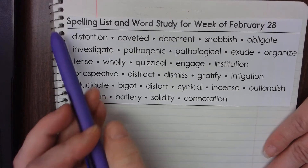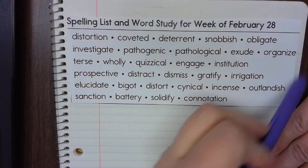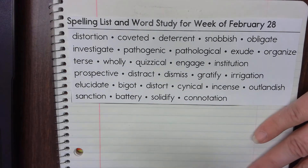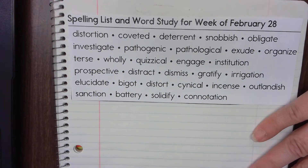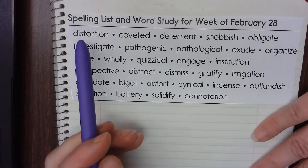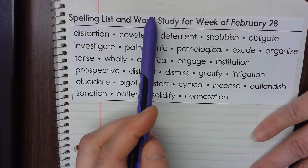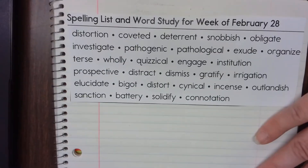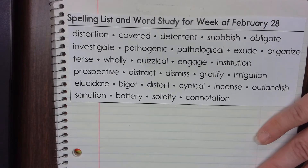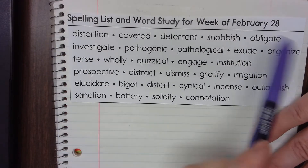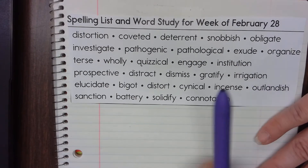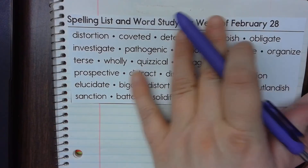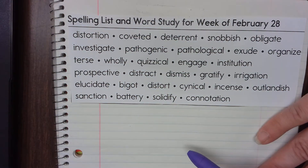The first thing that we're going to do is cut out our spelling word list and get it into our notebook. Cut around and affix it into your notebook with tape or glue.